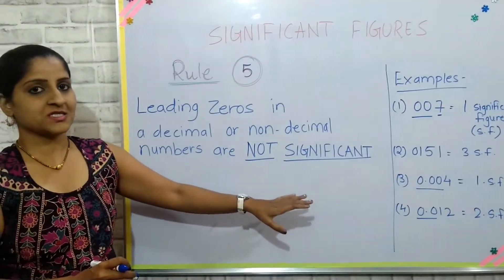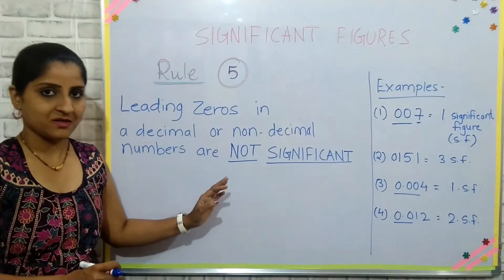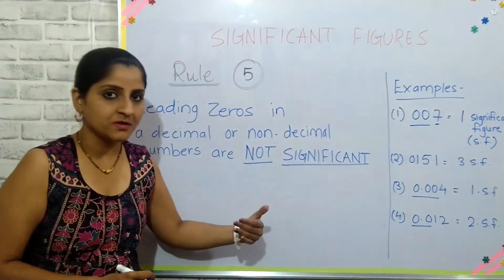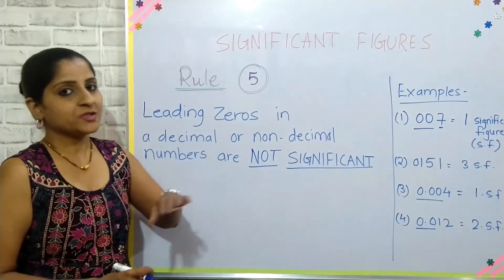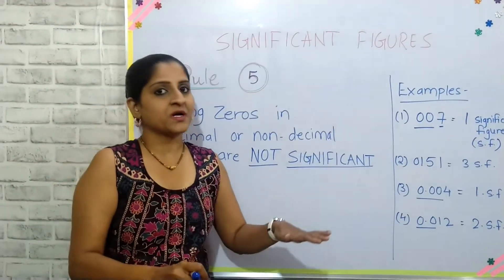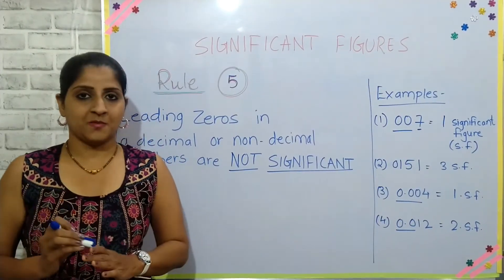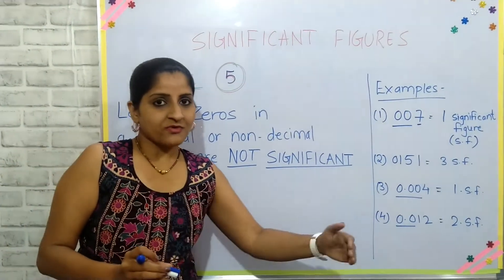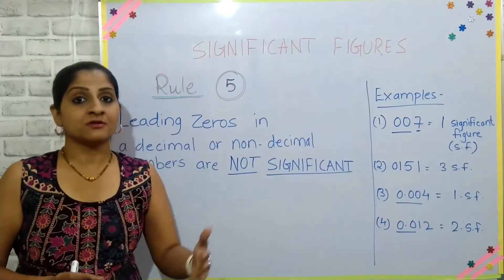So this is what rule number five — the last rule of significant figures — says: in both decimal and non-decimal numbers, if there are zeros before a number we call them leading zeros, and we do not count them when counting the significant figures in a number.